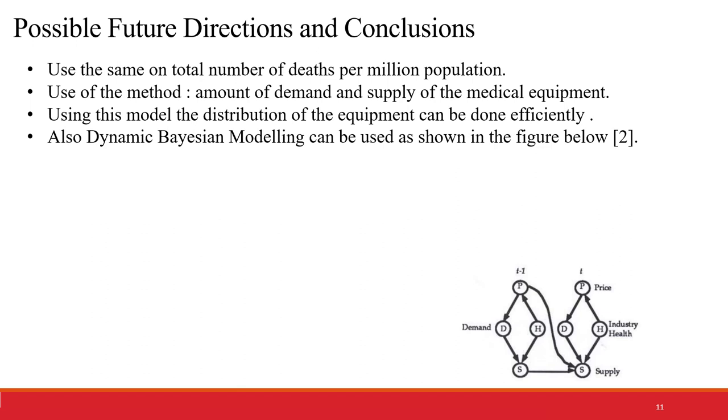Various other factors such as total number of deaths per million population can be considered. Amount of demand and supply of the medical equipment can be aided by tracking the number of cases. As in New York State, there are shortages of ventilators and surgical masks, while in some states there is no shortage. Using this model, the distribution of equipment can be done efficiently, and would be able to tackle this outbreak in a better way.